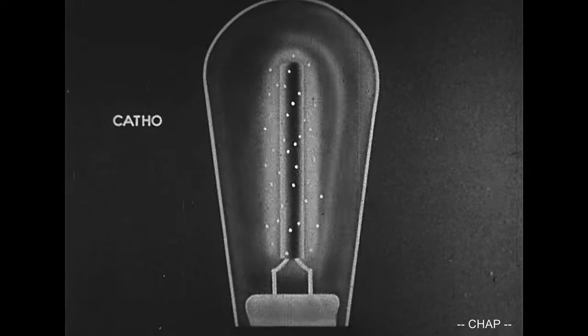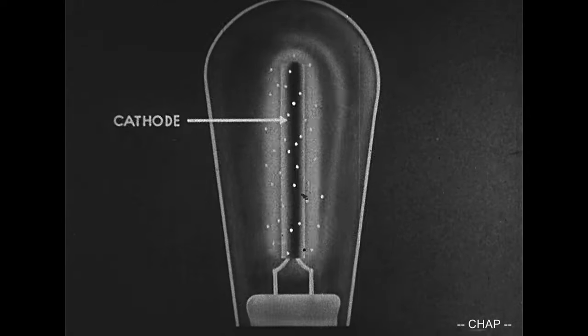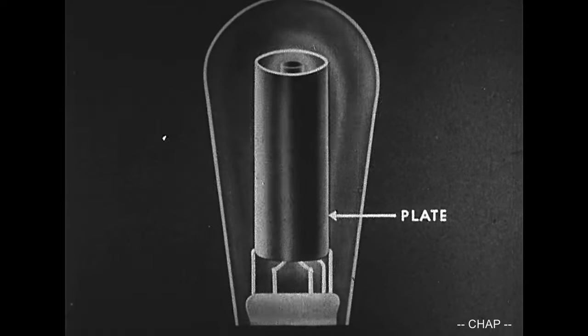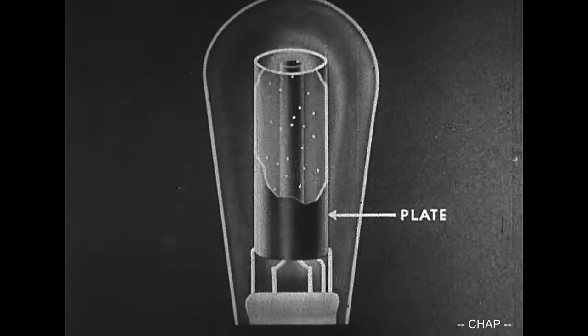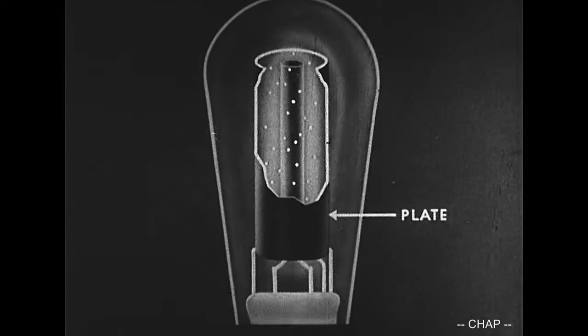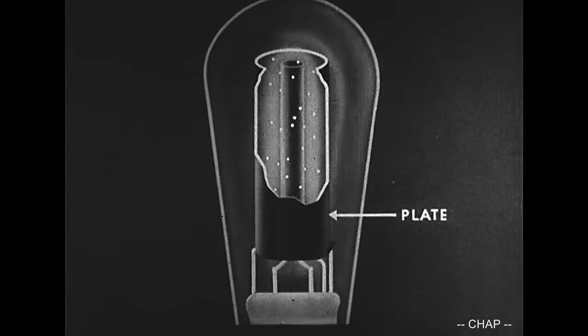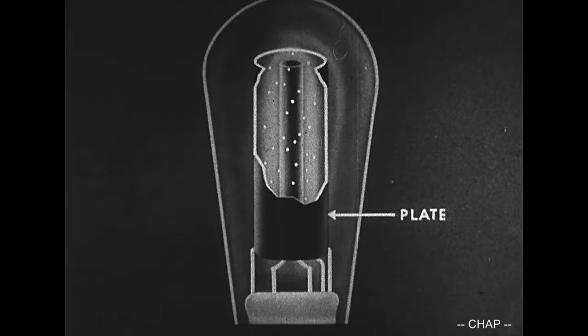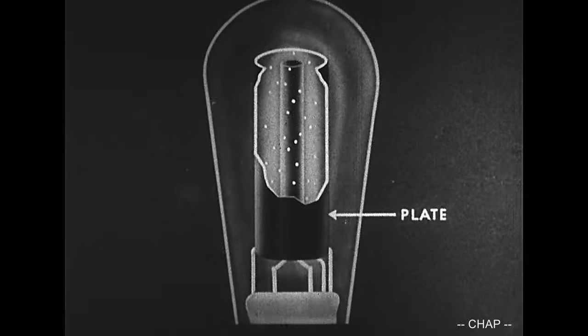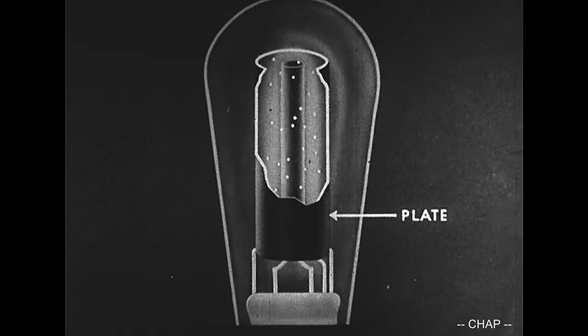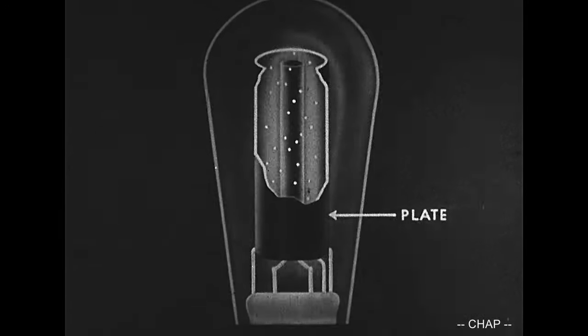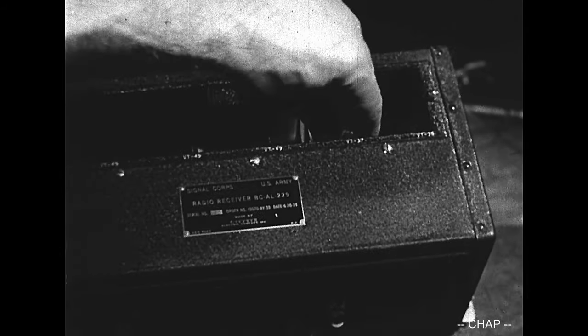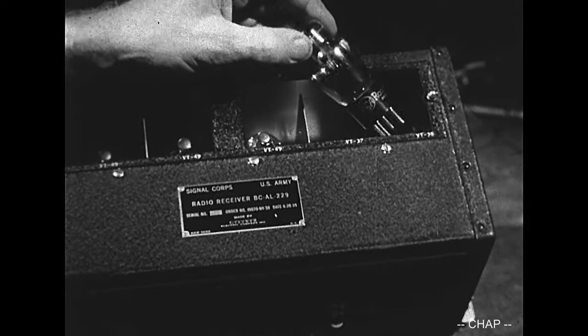The heated cathode with its swarm of electrons is surrounded by a larger tube element called the plate. These two parts, the cathode and the plate, are the principal elements of the diode tube. All tubes contain these two essential elements. Sturdy tubes, each with cathode and plate, serve our military transmitting and receiving sets.